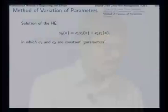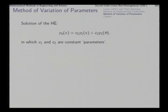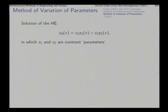In this method, we first note that if y1 and y2 are two linearly independent solutions of the corresponding homogeneous equation, then this linear combination with constant parameters c1 and c2 gives us the general solution of the homogeneous equation — that is, the complementary function for the purpose of the non-homogeneous equation.